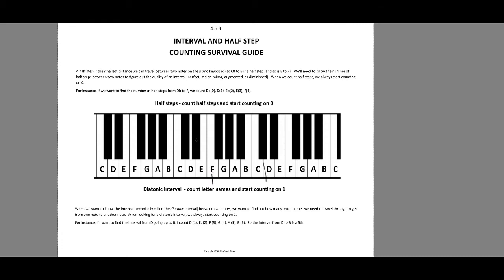The diatonic interval is simply asking how many letter names are we moving through. So: F — 1, G — 2, A — 3, B — 4, C — 5. Remember, when we're talking about letter names, we don't care if we start or end on a sharp, a flat, a natural, double sharp, or double flat. All we care about is the letter name. So C, C sharp, C flat — they all are equivalent when we're counting letter names. The answer is 5 letter names.